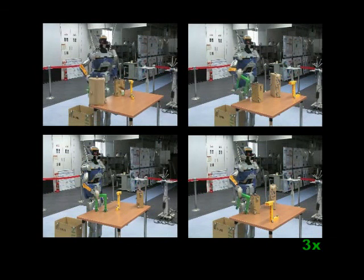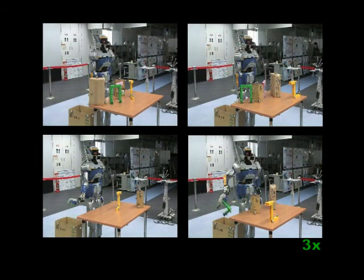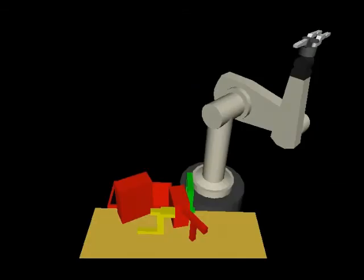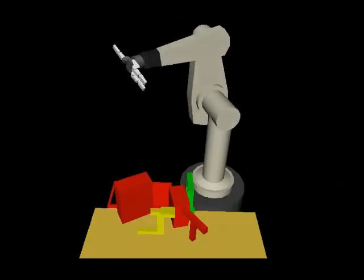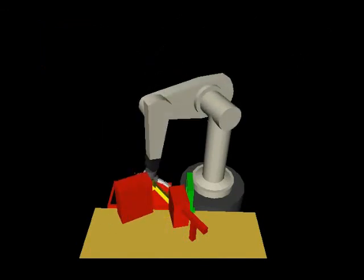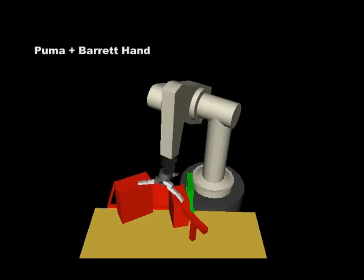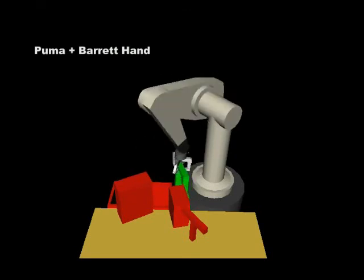The positions of all the objects in the scene were obtained using a motion capture system. Because of the flexibility of our framework, we are able to apply it to different robots with very different manipulators. Here we see a Puma robot with a Barrett hand performing the same clean-up task.